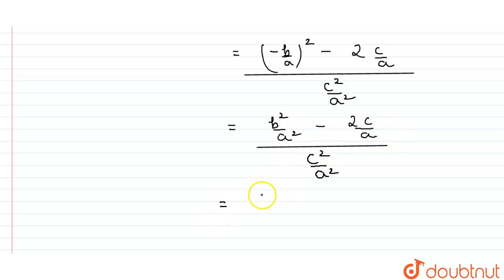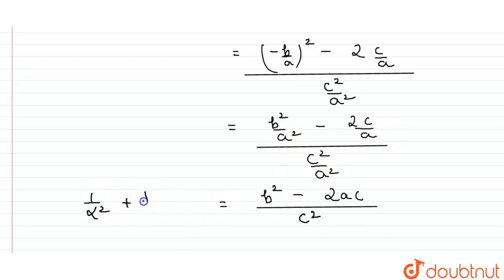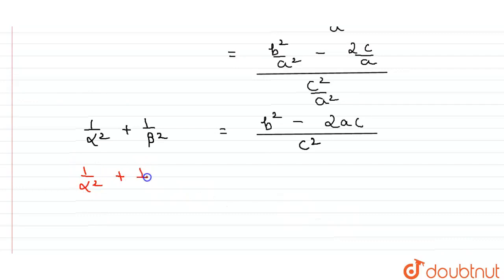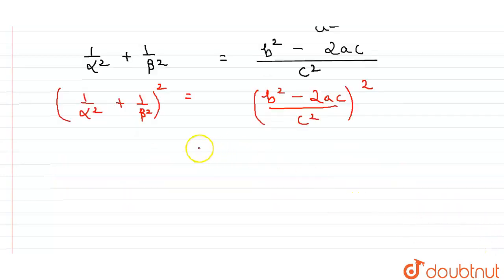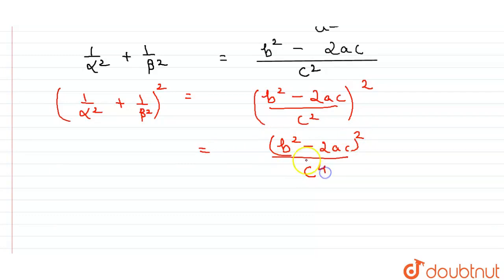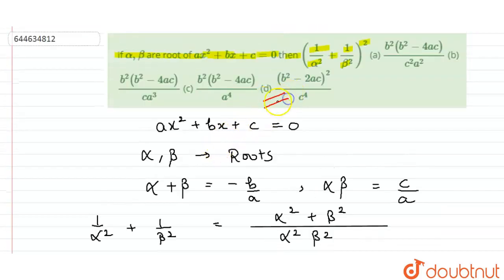Taking the LCM, this becomes (b² - 2ac) upon c², because the a² terms cancel out. So, 1/α² + 1/β² equals (b² - 2ac)/c². The whole square of this part gives (b² - 2ac)² upon c⁴. This is our answer, meaning option D is the correct answer.